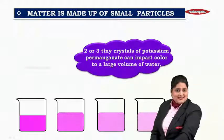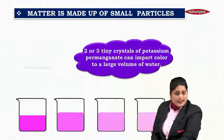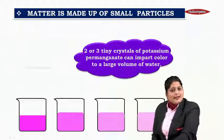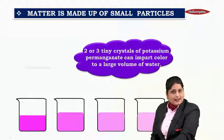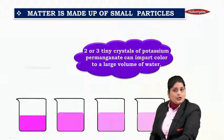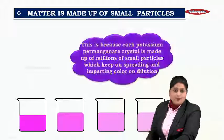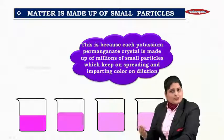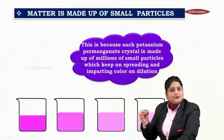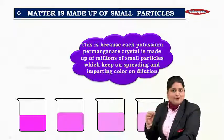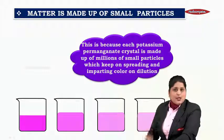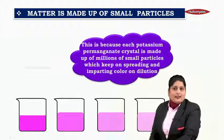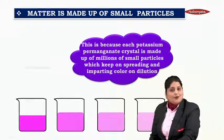Two or three tiny crystals of potassium permanganate can impart colour to a large volume of water. This is because each potassium permanganate crystal is made up of millions of small particles which keep spreading and imparting colour on dilution.